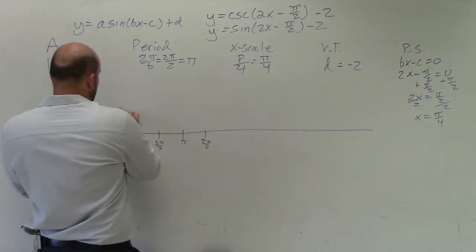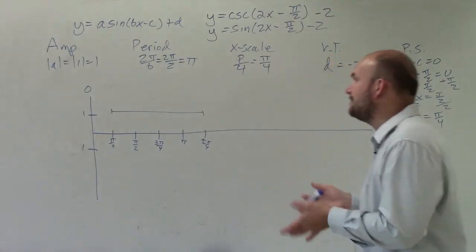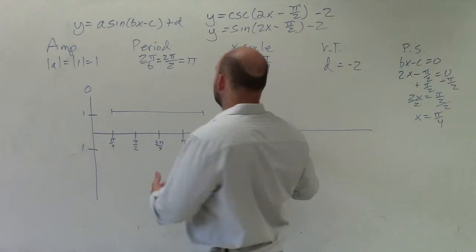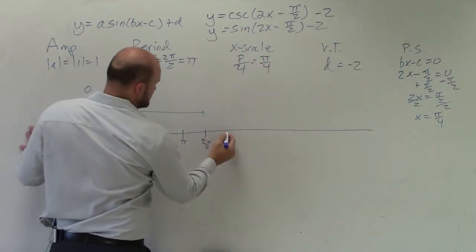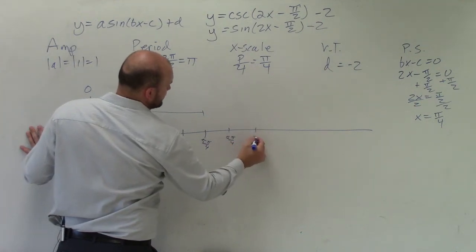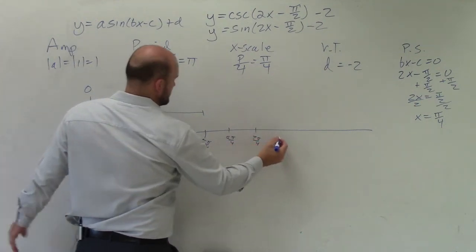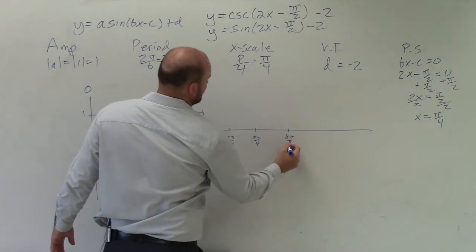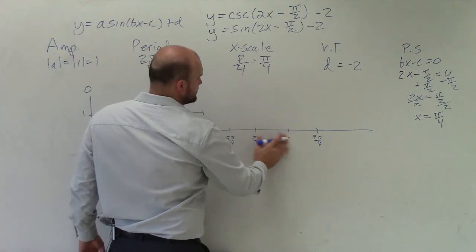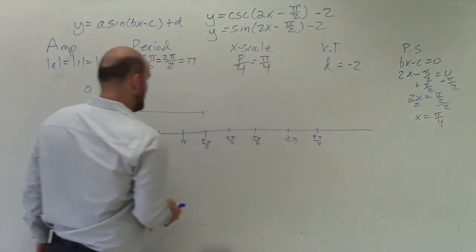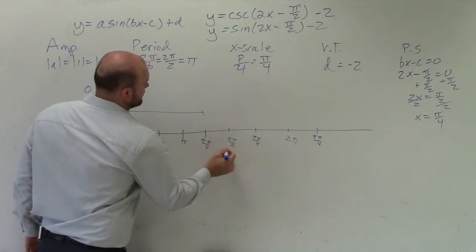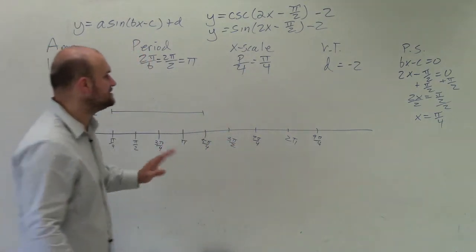The distance from here to here is creating one period. Now, I'm going to want to create at least two periods. So I'm going to continue my scale, just adding pi over 4 each one. So that would be 6 pi over 4, 7 pi over 4, 8 pi over 4, and 9 pi over 4. Obviously, we can reduce this down to 2 pi and we can reduce this down to 3 halves. So now we have at least two periods set up.